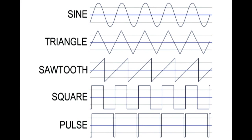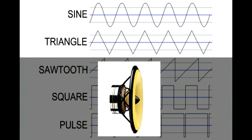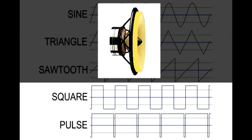There are five basic waveforms used by most synthesizers: sine, triangle, sawtooth, square, and pulse. Since these waves eventually go to a loudspeaker, their shape shows how the loudspeaker will move. When you play a sine or triangle wave, the speaker cone goes forward smoothly, then backwards smoothly. But a square wave or pulse wave causes the speaker to jump quickly from one position to another.